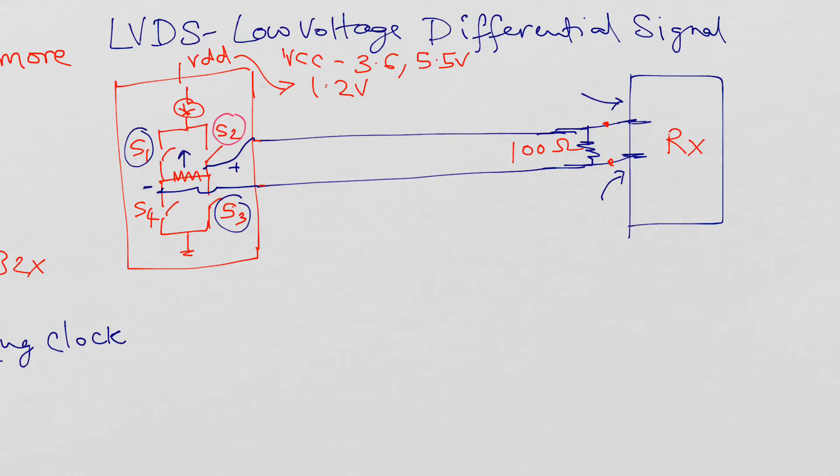s1 and s3 are on at one time and s2 and s4 are on at one time. If s2 and s4 are on, the current flows this way. You have approximately 3.5 milliamp current source here. The current flows this way, goes into the resistor, comes back out. If you have 3.5 milliamps flowing through this, it develops a 350 millivolt voltage across the resistor and that is sensed. If s1 and s3 are on, the current flows in the reverse direction through the resistor. Now you develop minus 350 millivolts.